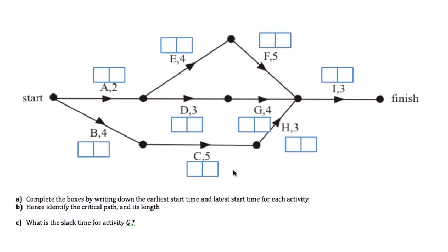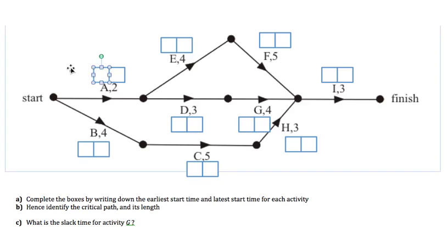This question is asking us to firstly complete the boxes. Remember, in each box the first number is the earliest start time and the second number is the latest start time. We work from start to finish to firstly get the earliest start times, and then go back the other way for the latest start times. Activity A comes from the start, so it has an earliest possible start time of zero — it's not waiting for any other activity and can start right away.